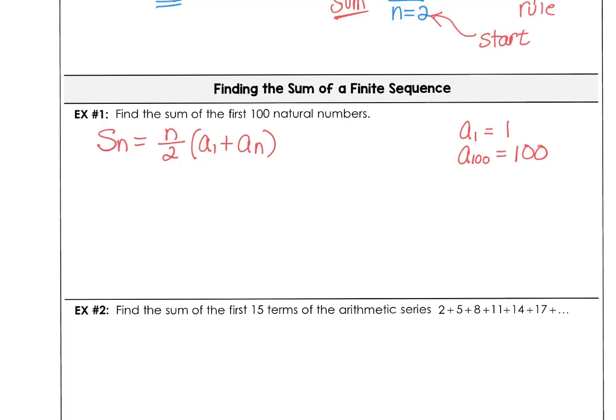So we want s sub 100. We're summing the first hundred terms. There are 100 numbers, we're going to take half of that. The first term is 1, the last term is 100. So our solution is 50 times 101. The first 100 natural numbers sum to 5050.